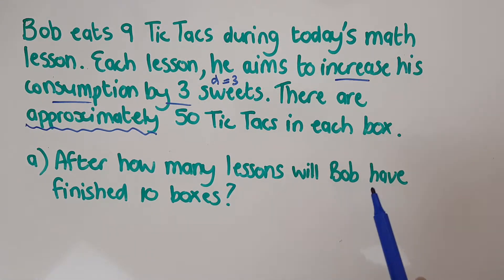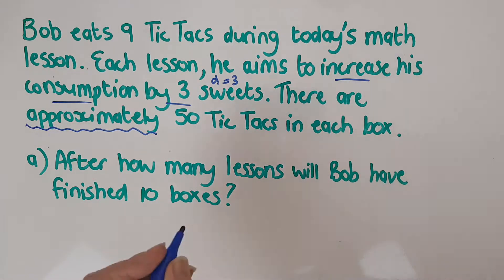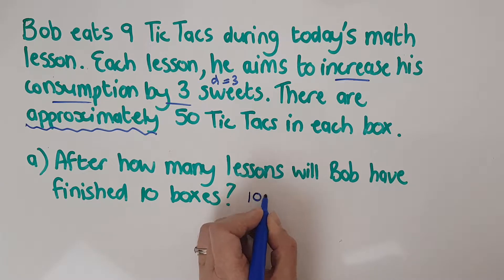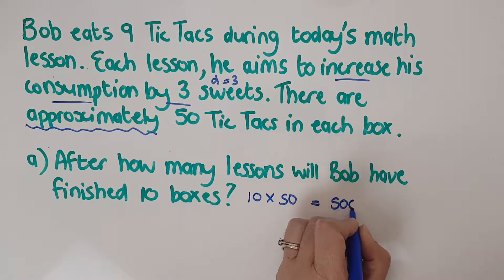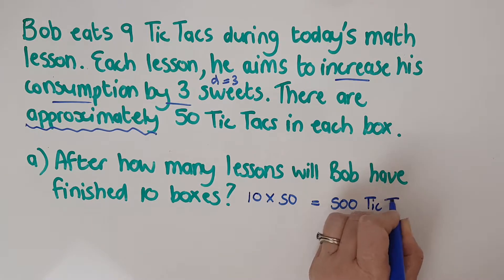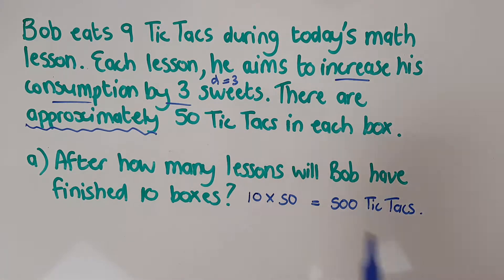After how many lessons will Bob have finished ten boxes? Fifty tic tacs in each box. Let's just quickly figure out how many tic tacs is that. So it's ten boxes, fifty tic tacs each, so we've got five hundred tic tacs. That's actually what they're asking. It's a roundabout question. It's actually a bit nasty the way it's been phrased.